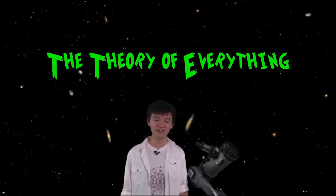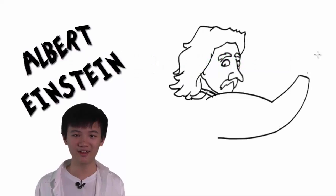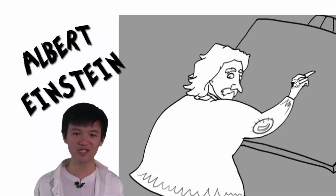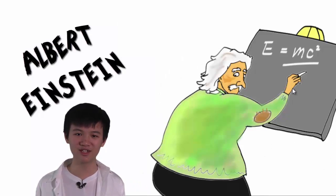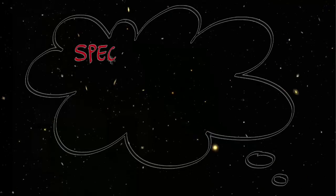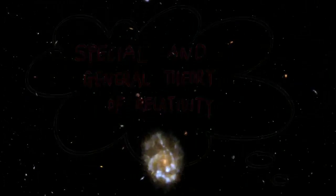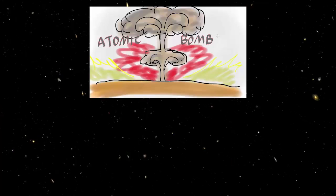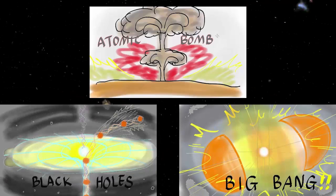It all started with the world's greatest scientist, Albert Einstein. He discovered theories that not only changed people's thinking but also changed the entire world. Two of his theories, the special and general theory of relativity, led to the invention of the atomic bomb and the theory of black holes and the Big Bang.